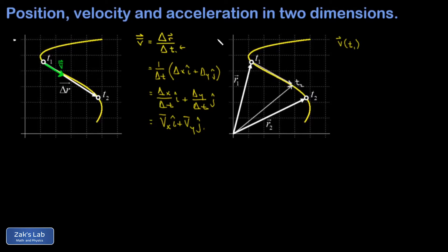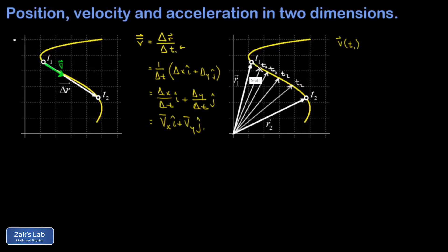As t2 becomes closer and closer to t1, we keep computing that displacement vector and dividing by the time interval separating those two points. One thing to notice is that when the time interval becomes sufficiently small, the velocity vector computed becomes tangential to the trajectory — and that's an important thing to remember. Instantaneous velocity is always tangential to the trajectory.